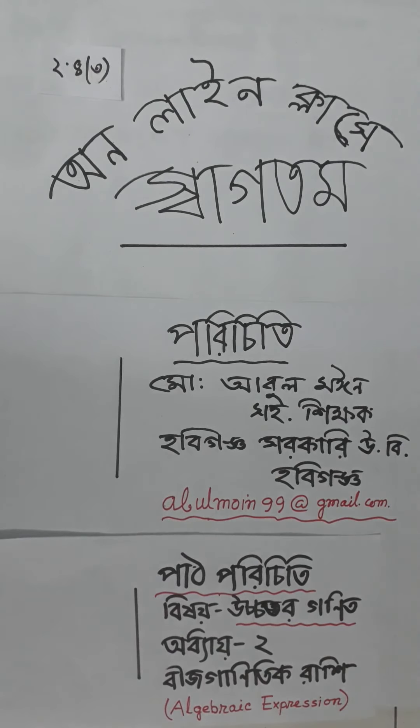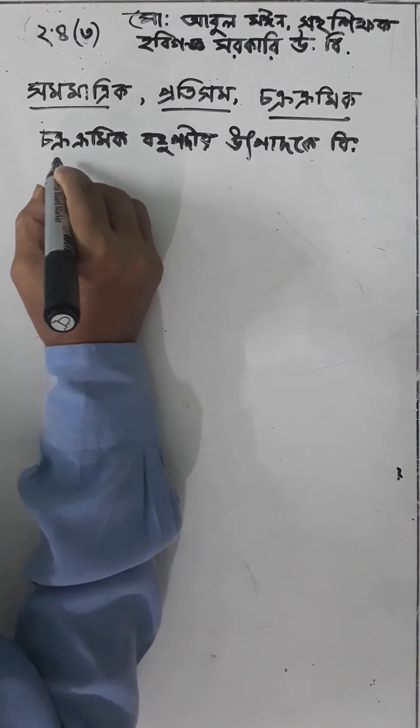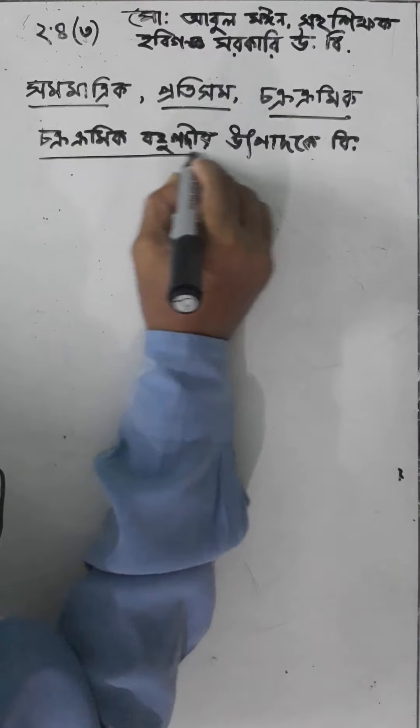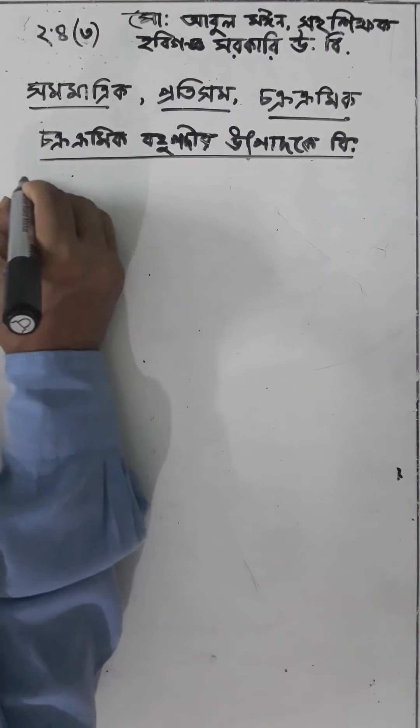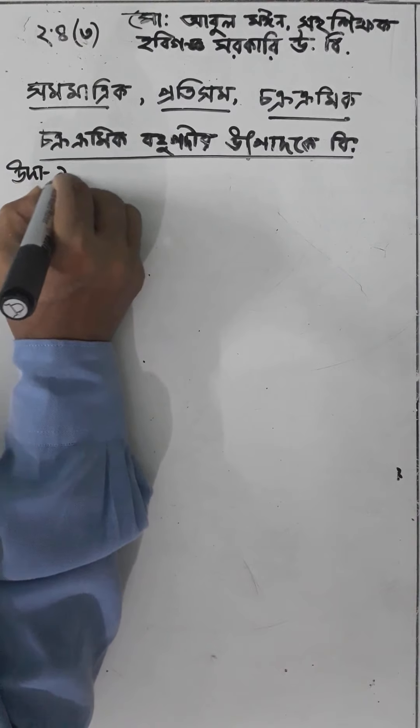Assalamu alaikum. I am explaining chakramic rashir (cyclic expressions) utpadak bishleshon (product factorization). Let's see an example, udaharan.